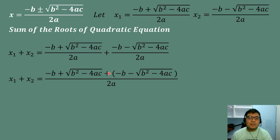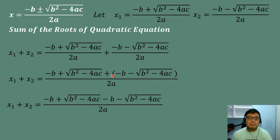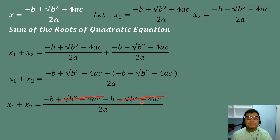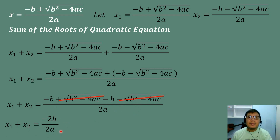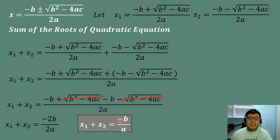We distribute and combine similar terms. Positive square root of B squared minus 4AC and negative square root of B squared minus 4AC will cancel out. So, negative B plus negative B will be equal to negative 2B, all over 2A. Getting the lowest term, negative 2B over 2A simplifies to negative B over A.